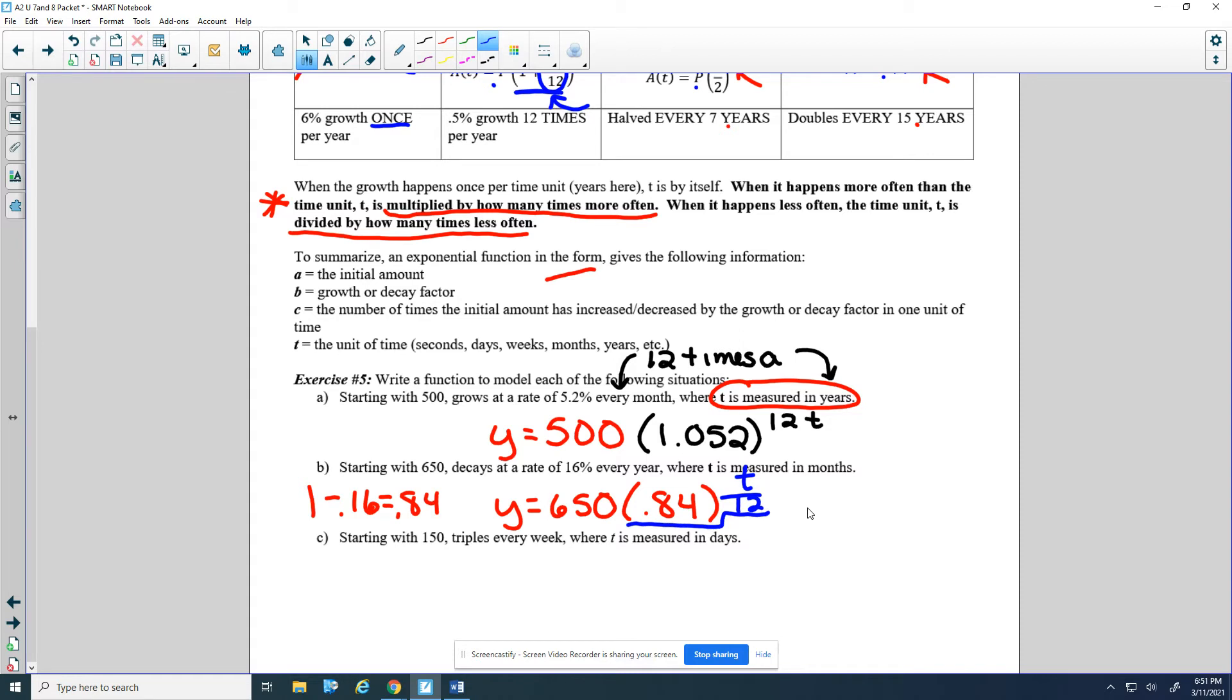So the next one, starting with 150, it triples every week where t is measured in days. So triples, it's been a while since we did triples, it's just a base of 3. So it's a week, but t is measured in days. So I have to wait longer than the time unit, where weeks take longer than days, and they take 7 times longer. So this is t over 7.